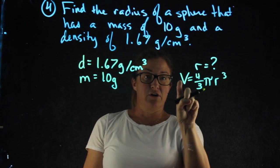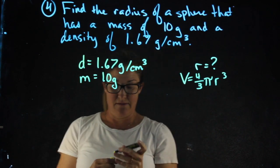If I want to solve for the radius, I need the volume. For me to get the volume, I'm going to use the density and the mass.